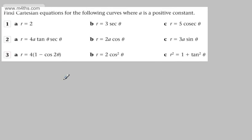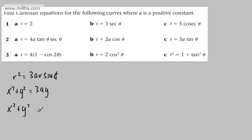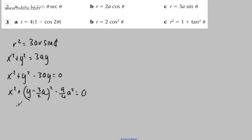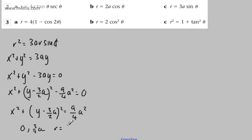For r equals 3a sin theta, multiply through by r to get r squared equals 3a r sine theta, so x squared plus y squared equals 3ay. Completing the square: x squared plus (y minus 3a/2) squared minus 9a²/4 equals 0, giving x squared plus (y minus 3a/2) squared equals 9a²/4. This is a circle, centre (0, 3a/2), radius 3a/2.